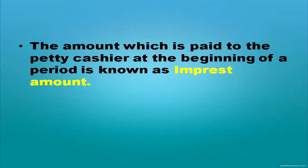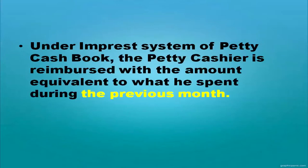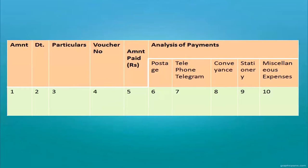The amount given to the petty cashier at the beginning of a period is known as the imprest amount. Under the imprest system, the petty cashier is reimbursed with the amount equivalent to what he spent during the previous period. The format of the petty cash book includes: amount received, date, particulars, voucher number, amount paid, and its bifurcations like postage, telephone expenses, telegram, conveyance, stationery, etc.